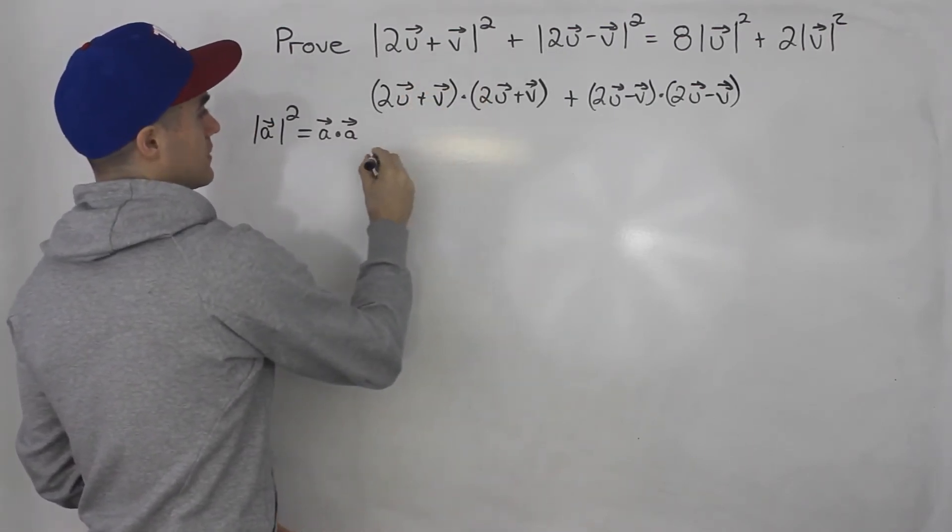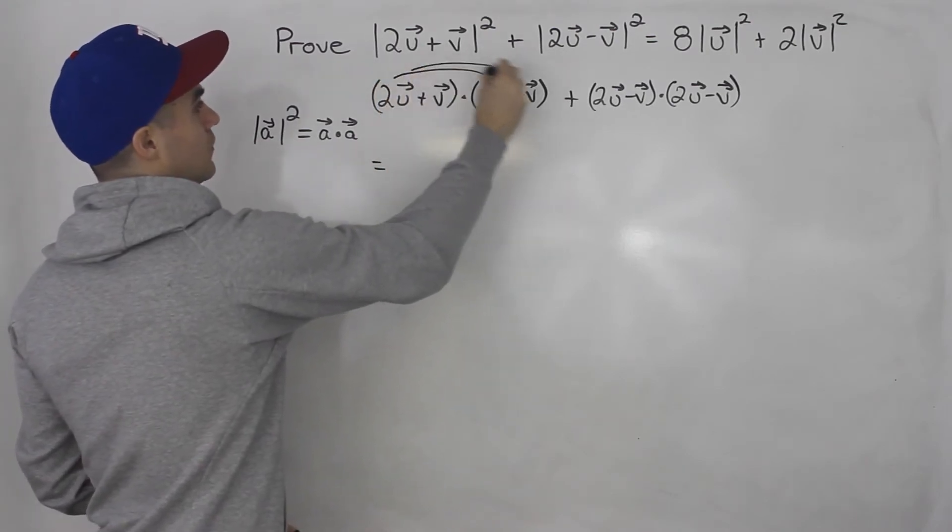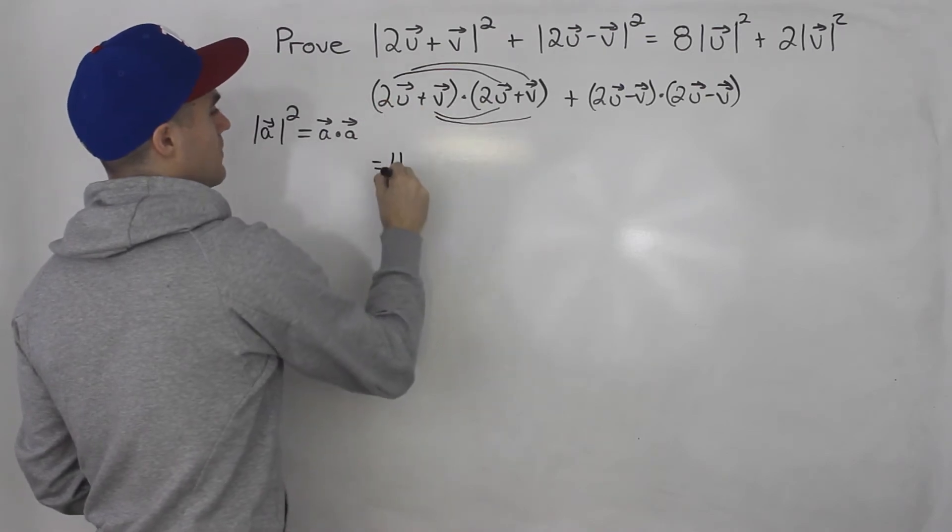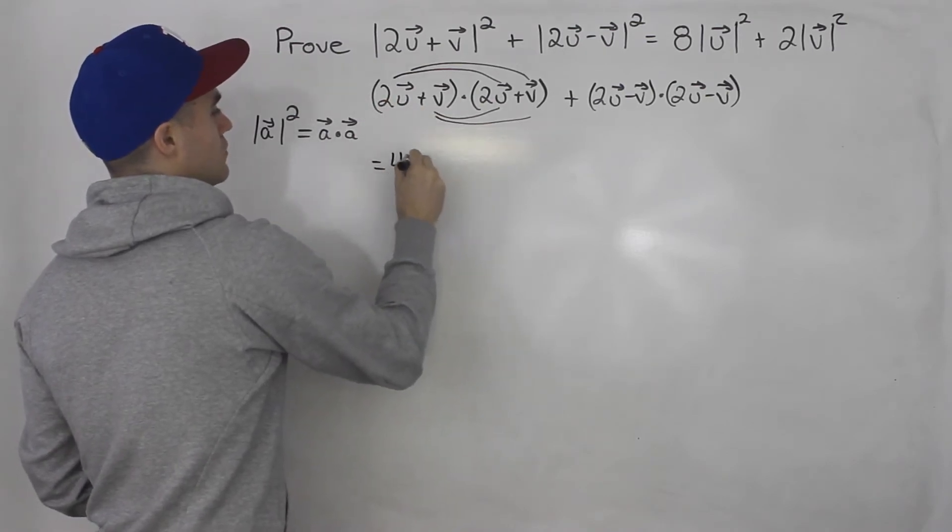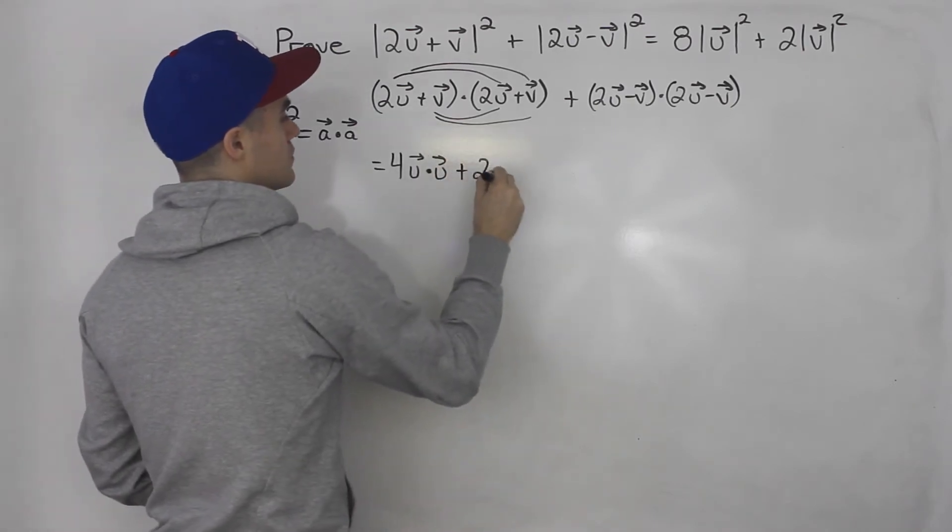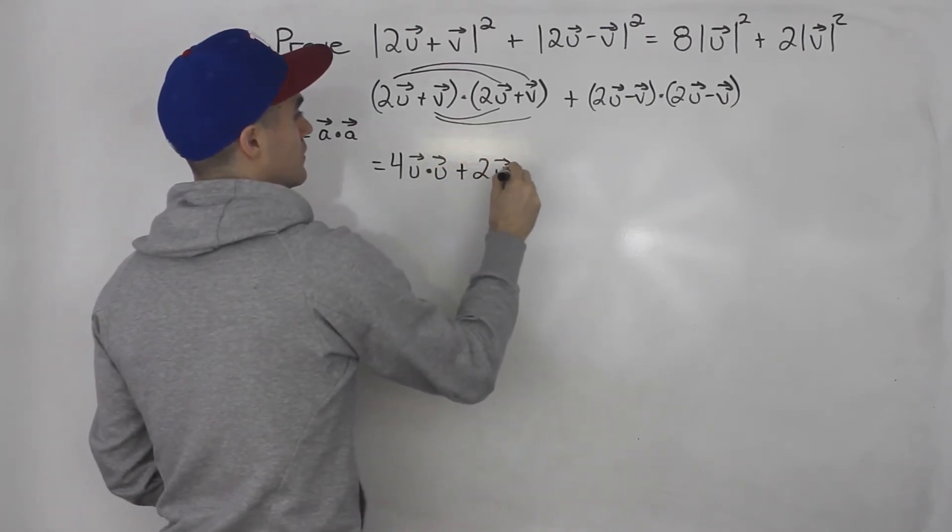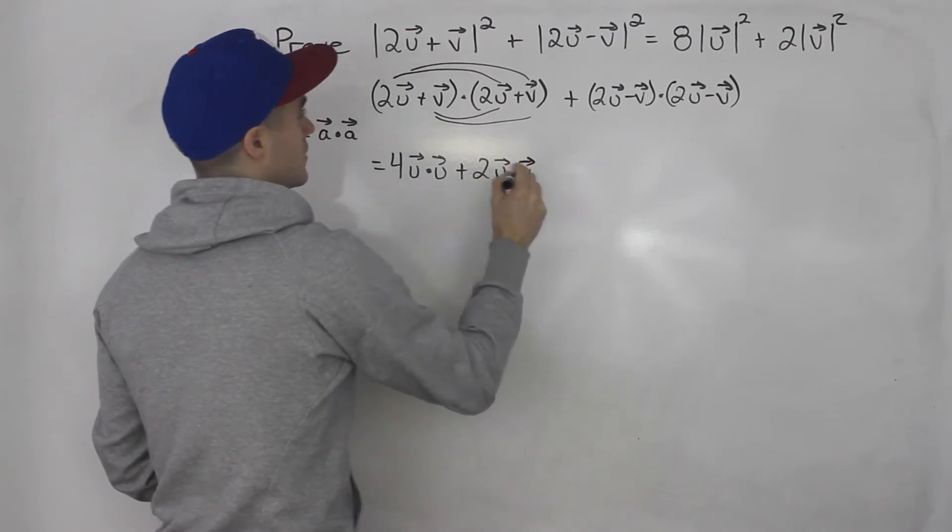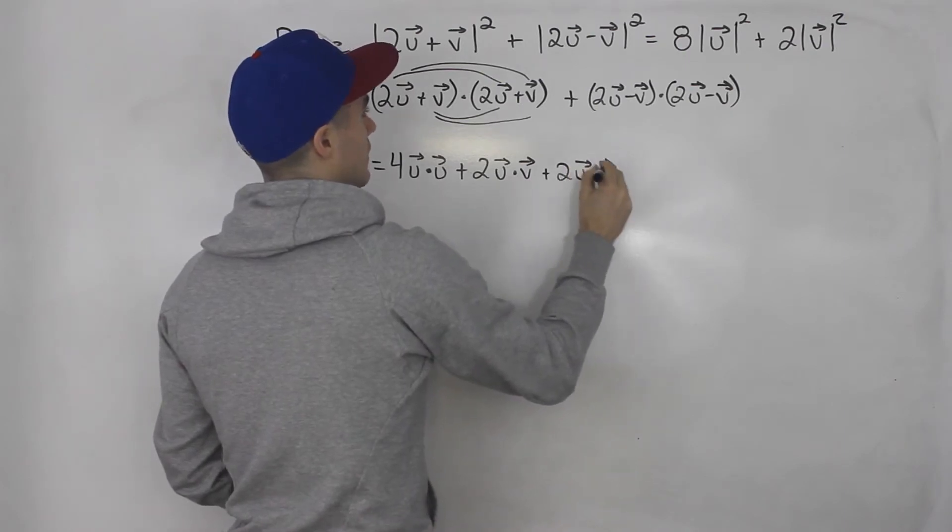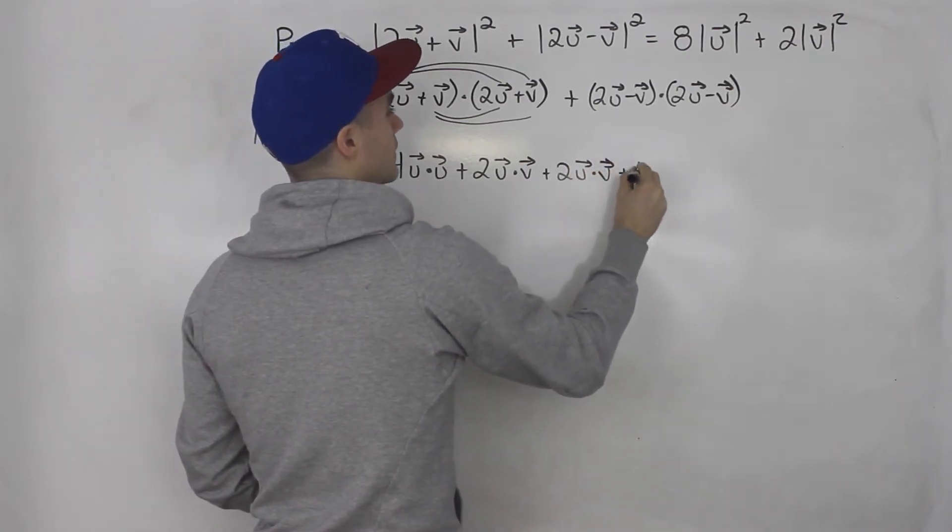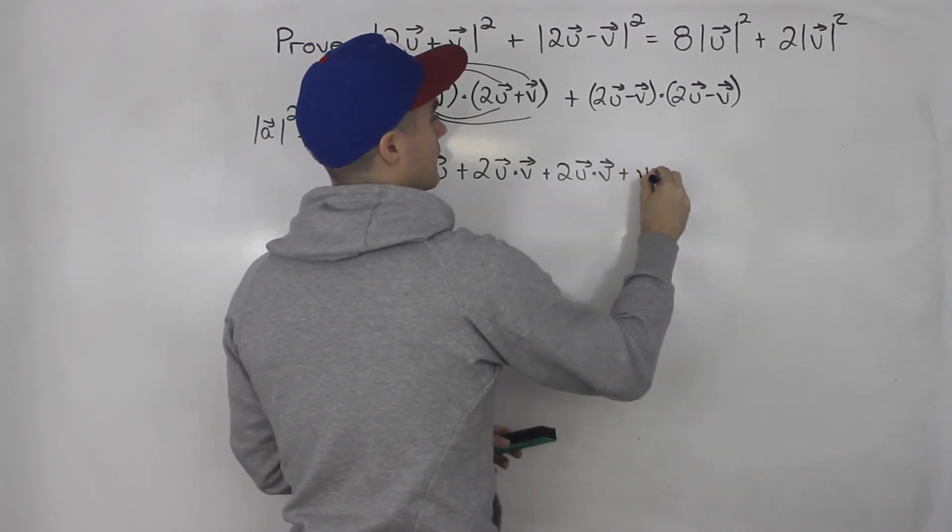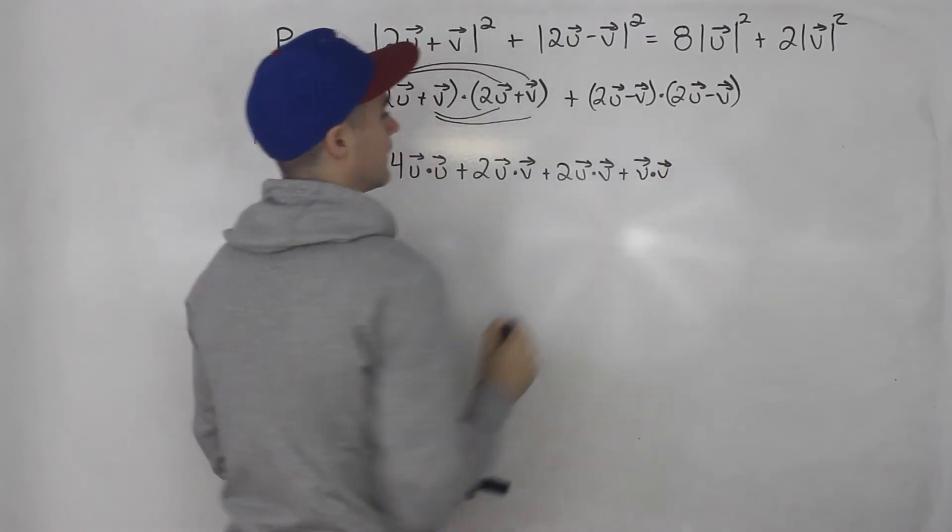So basically, what's this going to equal? Well, we can expand these brackets. So 2 times 2, that's 4. And then I got u dot vector u. And then plus 2u dot vector v plus 2u dot vector v. And then plus v dot vector v.